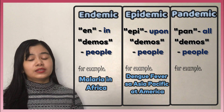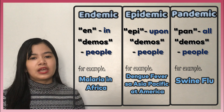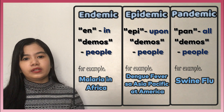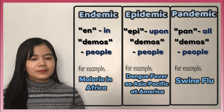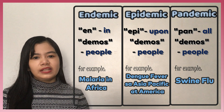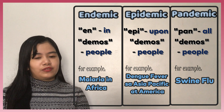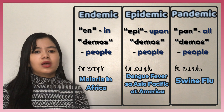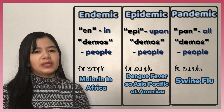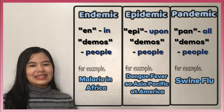Halimbawa, ang 2009 swine flu pandemic na caused ng H1N1 flu strain ay officially na-identify noong April 2009. Pero it was officially declared as a pandemic noong June 11, 2009, at natapos ang pandemic a year after. Pero after one year, more or less 285,000 people sa buong mundo ang namatay.